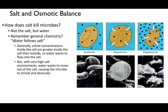In an isotonic solution — equal concentrations inside and outside the cell — there's no net movement of water. In a hypotonic solution, where concentration is higher inside the cell than outside, water moves from low to high concentration into the cell. In a hypertonic solution, where there's more solute outside than inside, water rushes out of the cell. In the hypotonic scenario, water rushing in could rupture the cell; in the hypertonic scenario, water rushing out could dry and kill the cell. It's important to maintain osmotic balance.